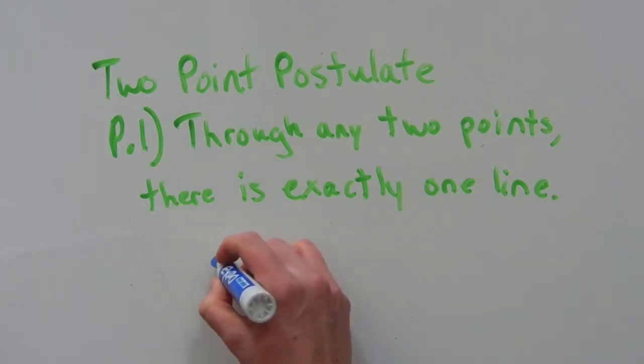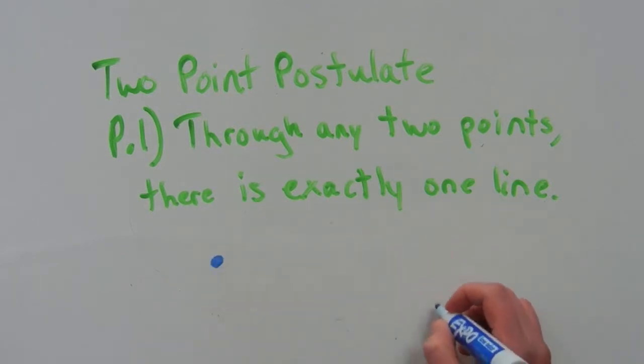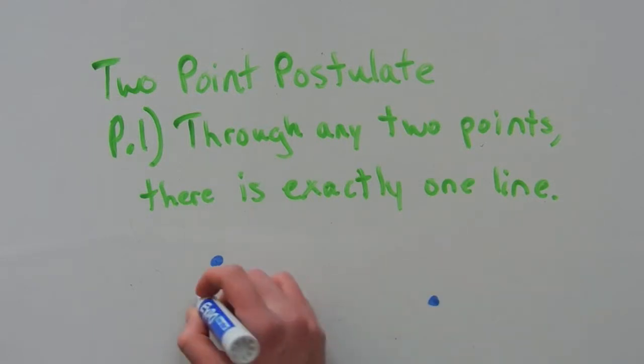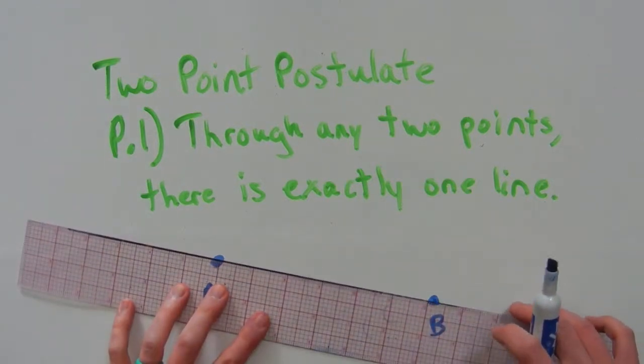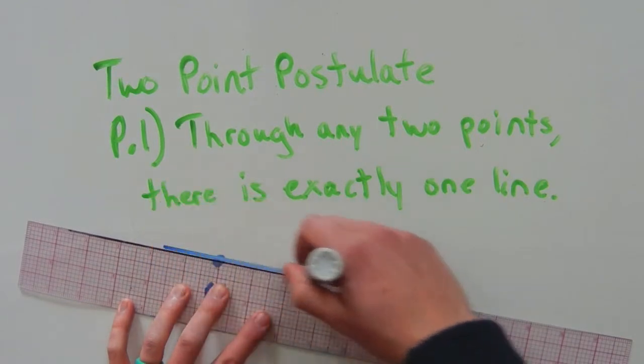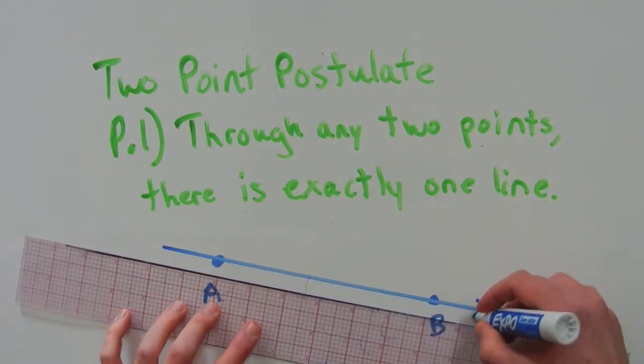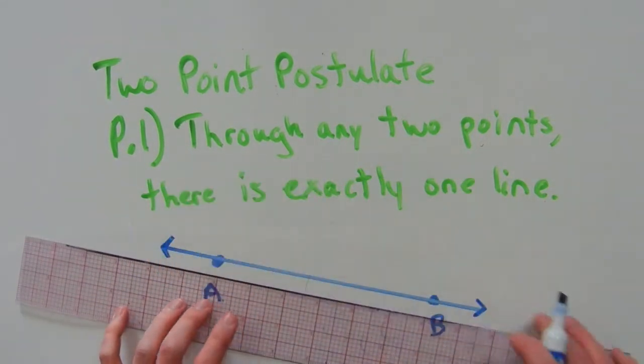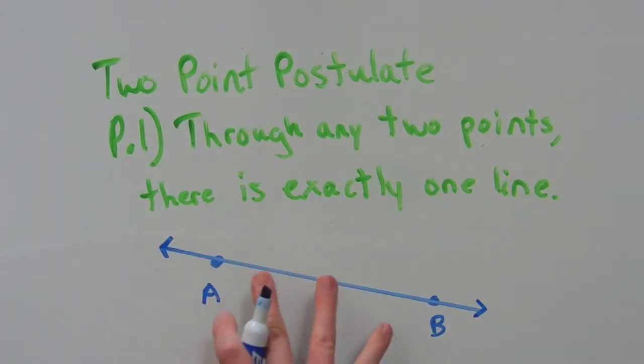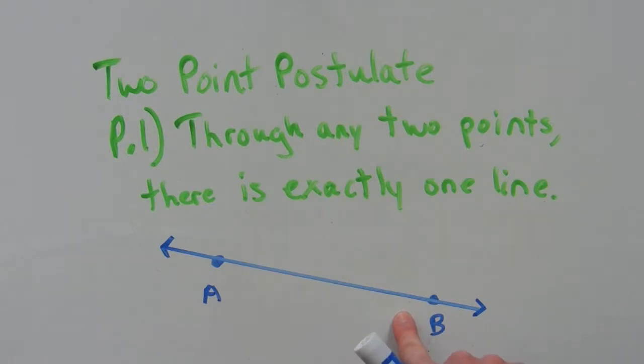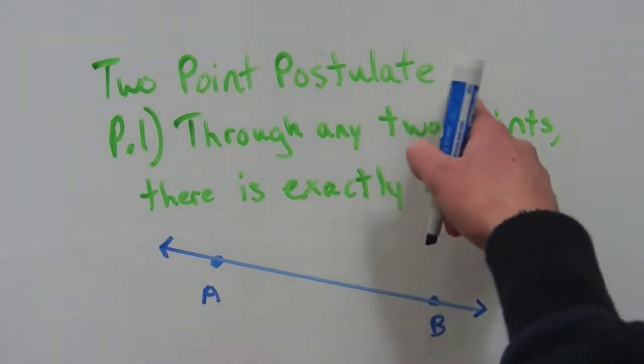A line is made up of two points. So if I have a point there and a point there, label them A and B, we can draw a line that connects those two points. There is no other line that we can draw between these two points. A and B are only connected one way, and that is through this line here. That is the two-point postulate.